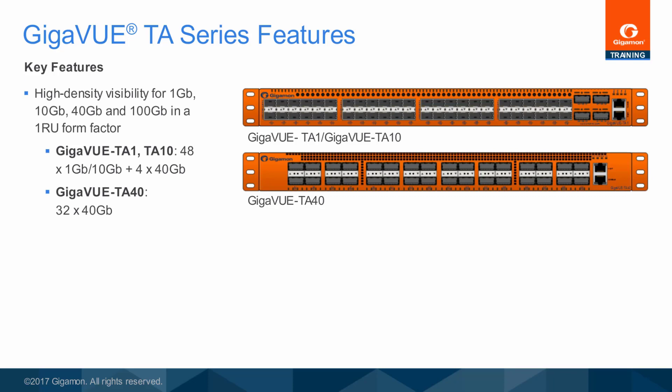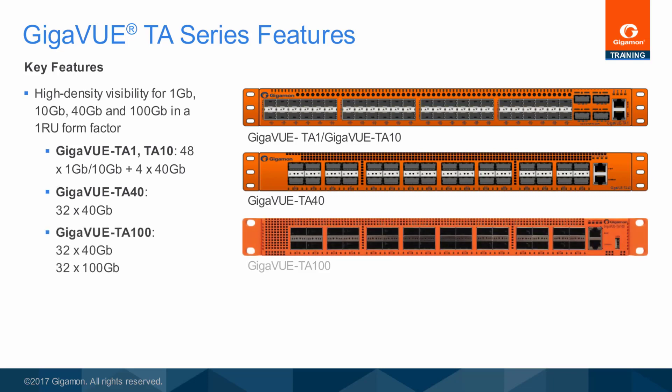The Gigaview TA40 includes 32 40 gigabit ports, offering high-density visibility for 40 gigabit traffic. The Gigaview TA100 provides traffic aggregation up to 100 gigabit, with 32 ports supporting speeds of either 40 gigabit or 100 gigabit.